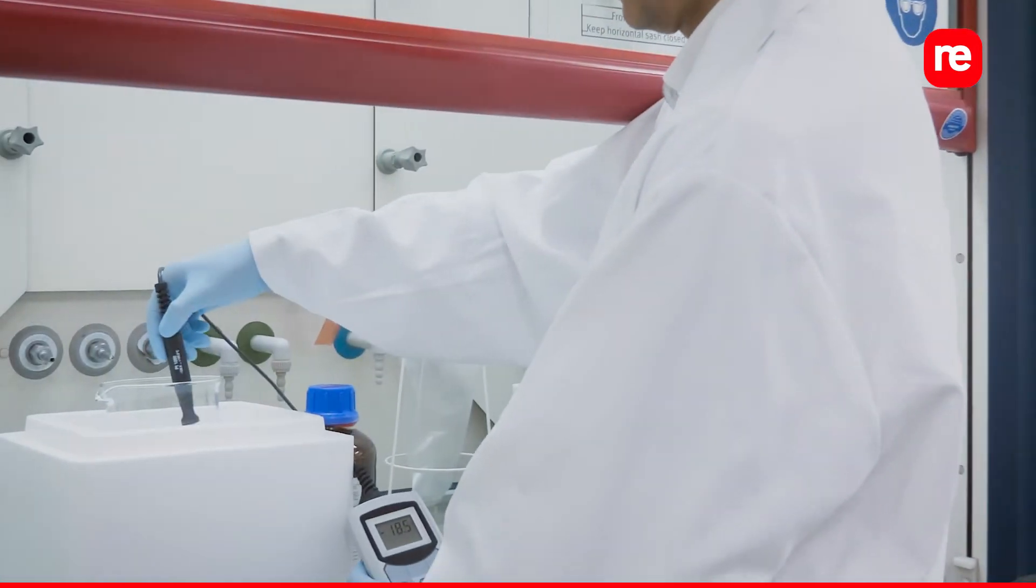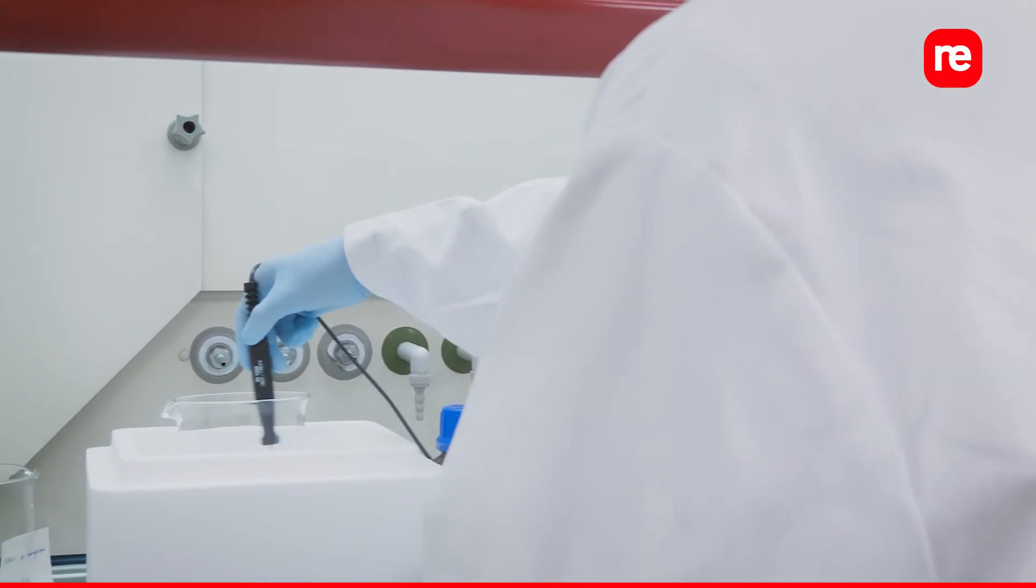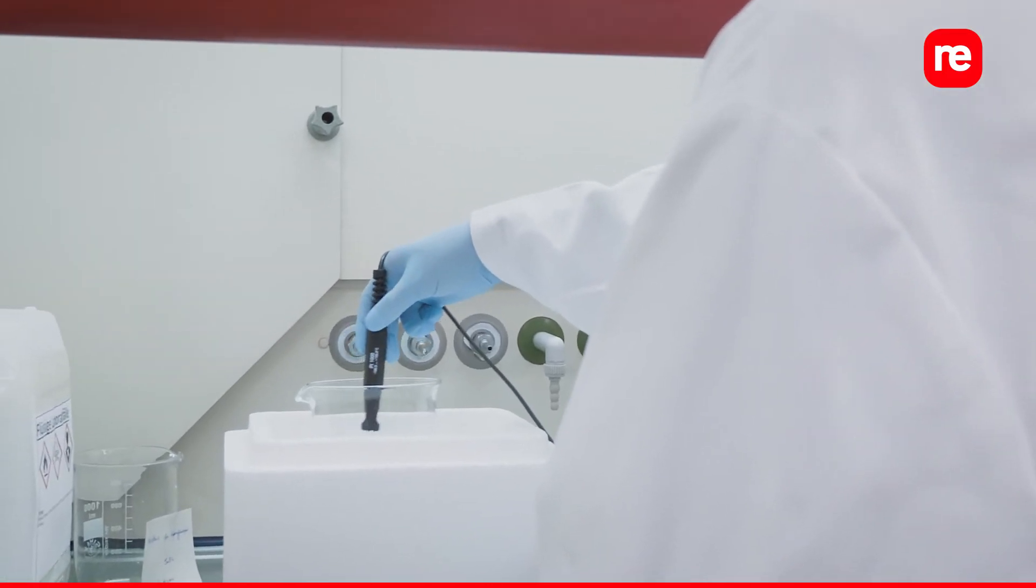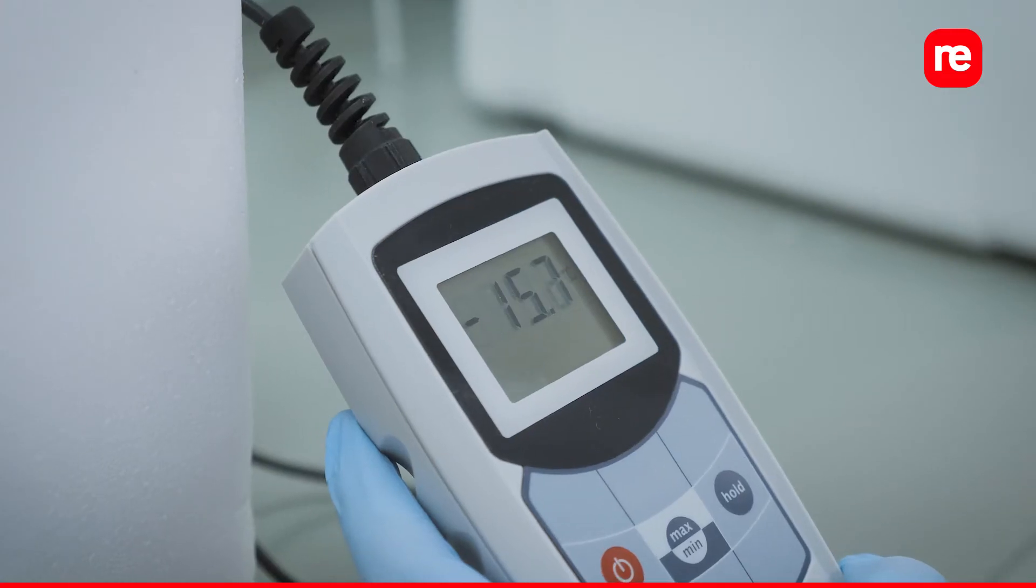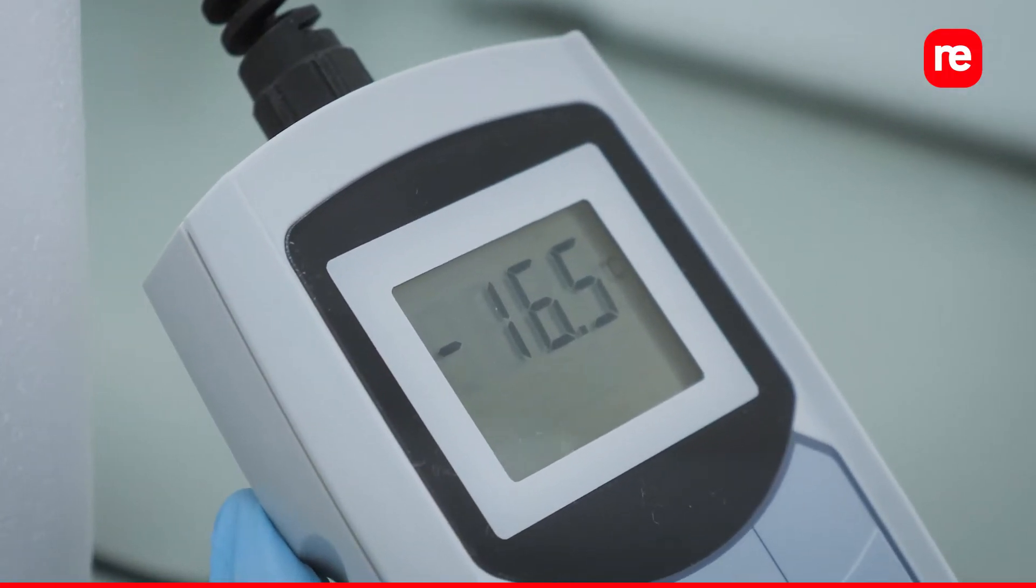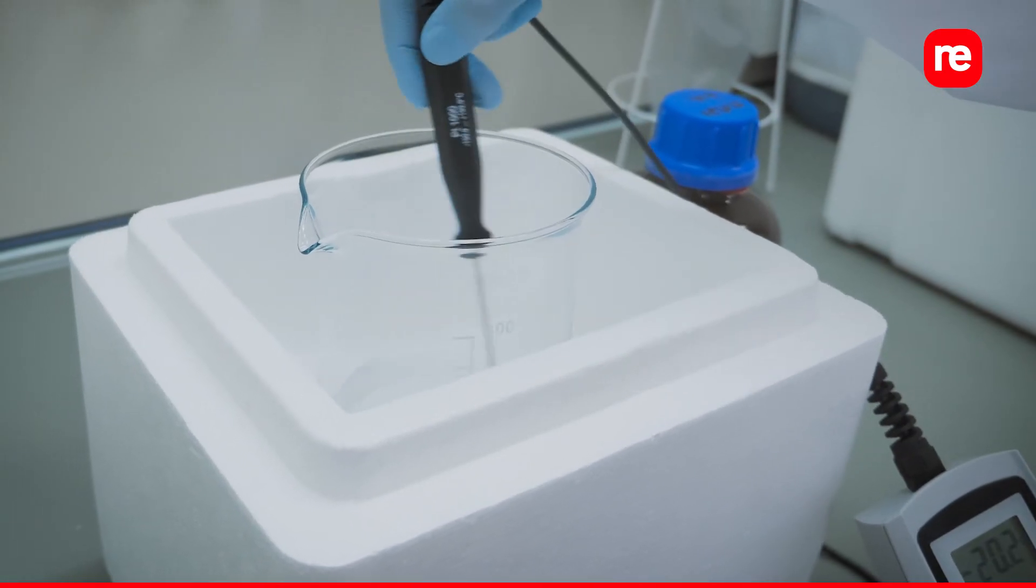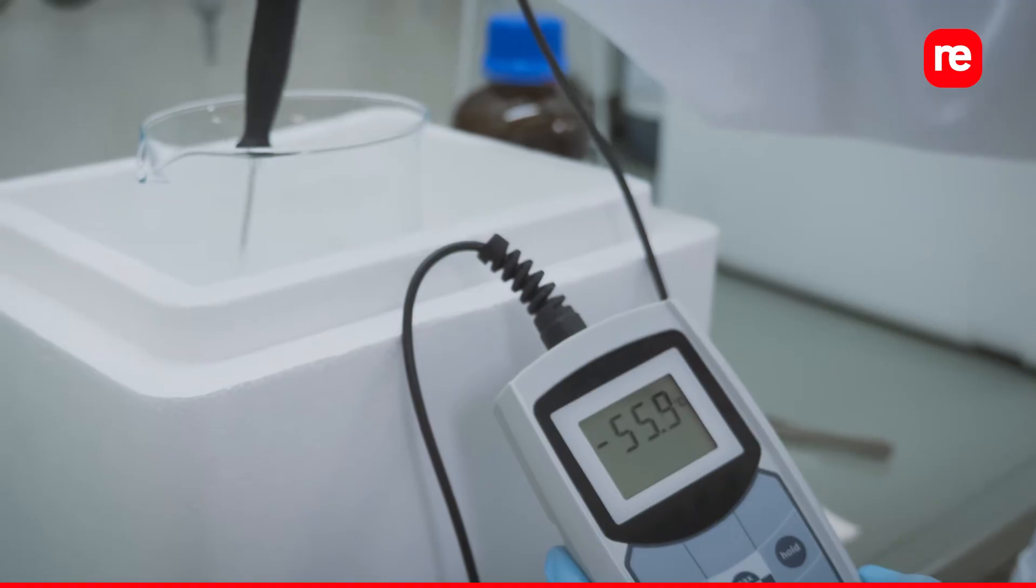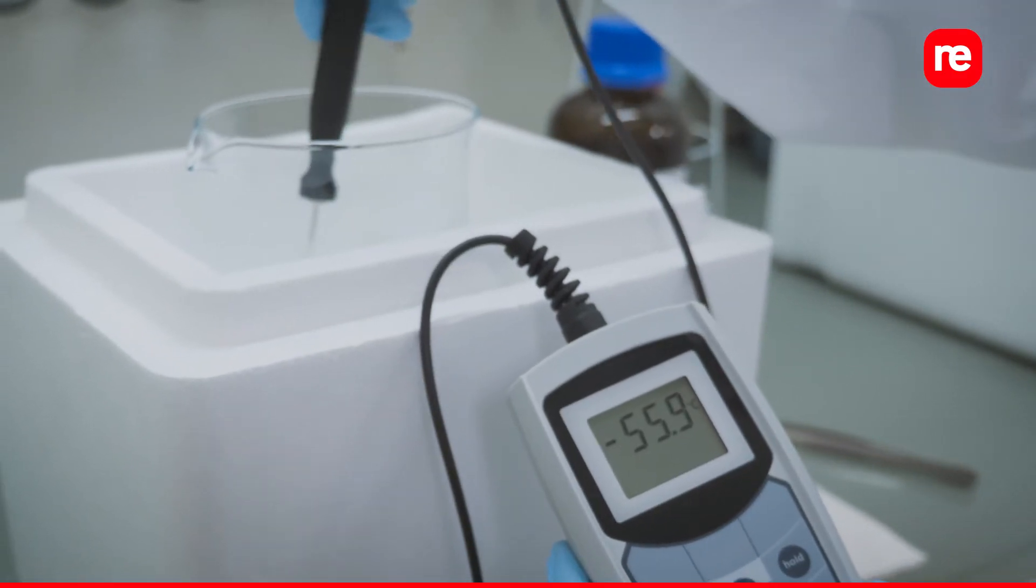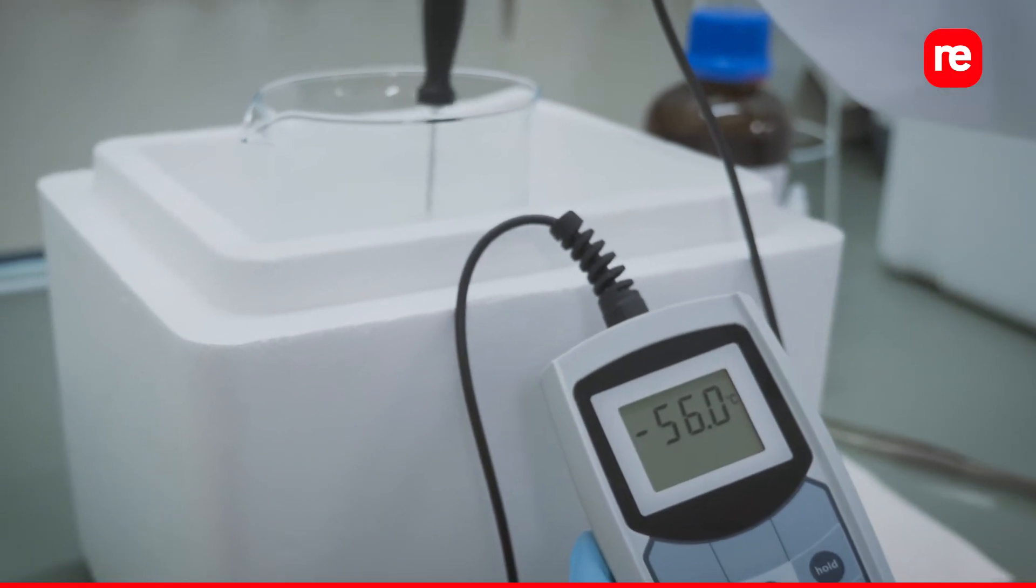Now back to our isopentane setup. Make sure to stir the liquid regularly to ensure a homogeneous temperature. For convenience, we use a thermometer for this to simultaneously measure the cooling progress. Ensure that the isopentane is evenly cooled to approximately minus 55 degrees Celsius.